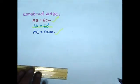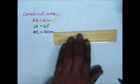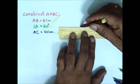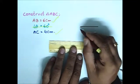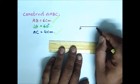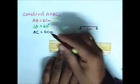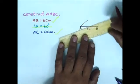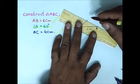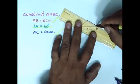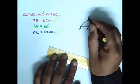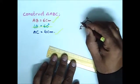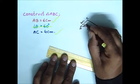For all constructions, you have to construct a rough triangle first. The base AB is 6cm, angle A is 60 degrees, and BC is 6cm. Here AC, or CA, is 4cm and angle A is 60 degrees.